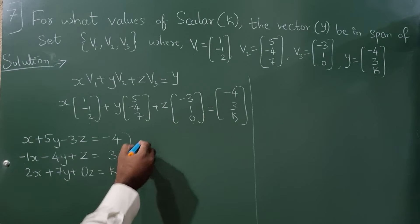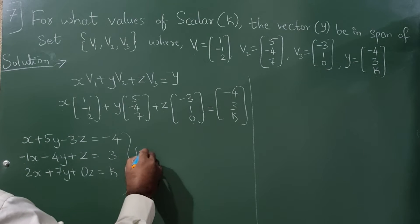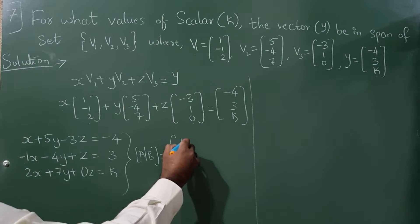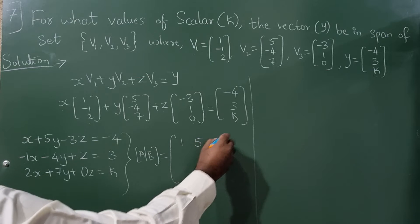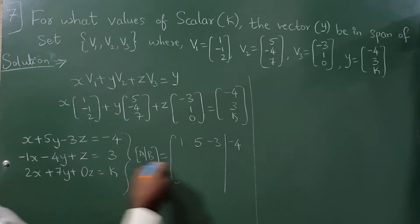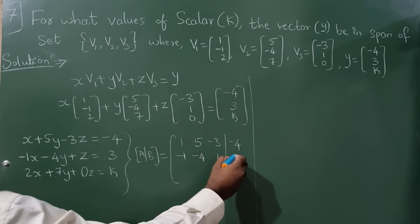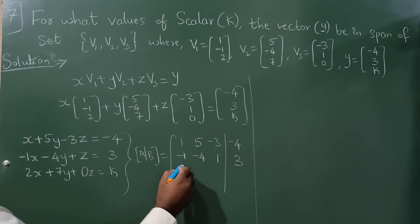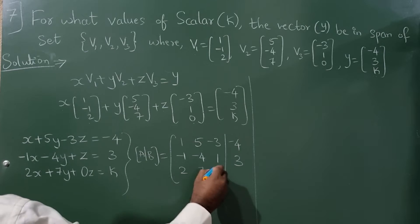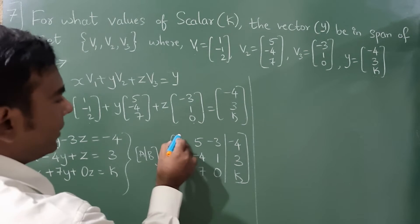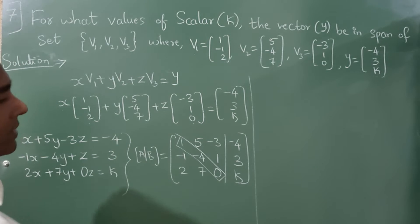Now you have to write this in a matrix form. So the coefficient of this is 1, 5, minus 3, and right here minus 4. The coefficient is minus 1, minus 4, 1, and 3. Here it is 2, 7, 0, and k. Fine. Now this is your diagonal elements.